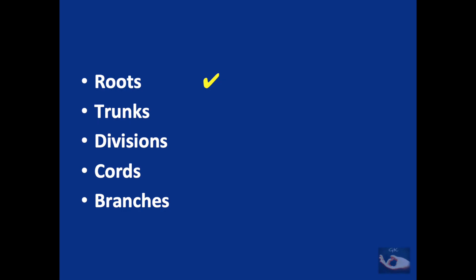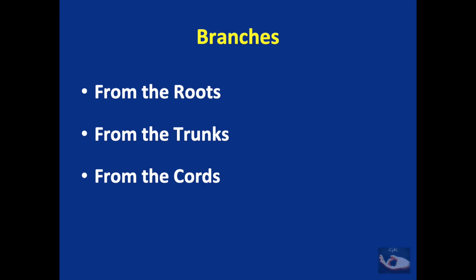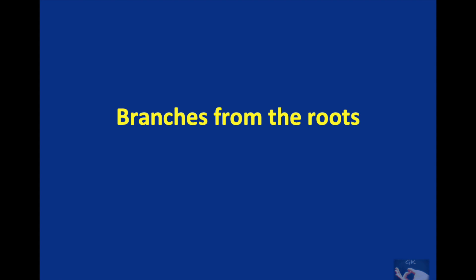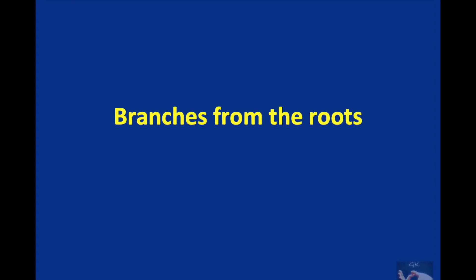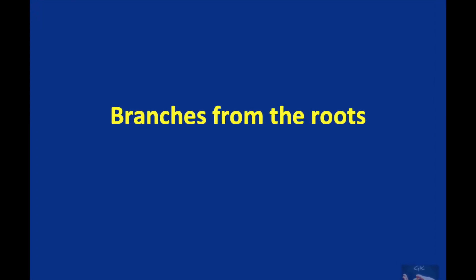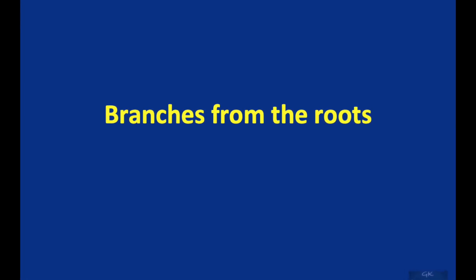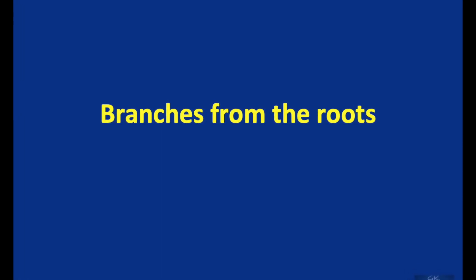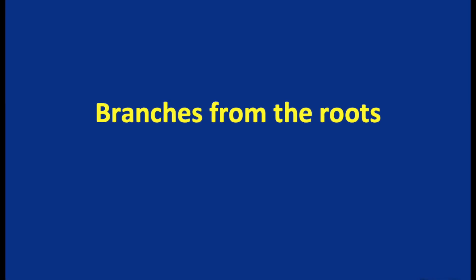So far we have covered the roots, trunks, divisions, and cords of the brachial plexus. We shall now see the branches: two from the roots, two from the trunks, seven branches from the cords, and six terminal branches also from the cords. As we examine each branch, red dotted lines will indicate motor fibers and green dotted lines will indicate sensory fibers.